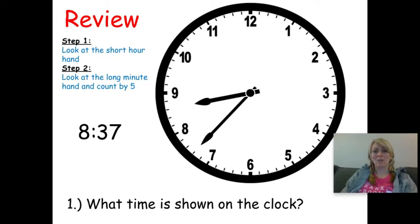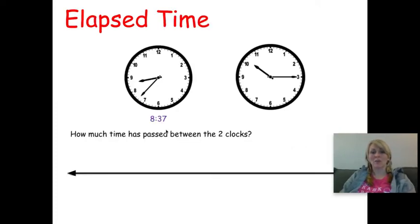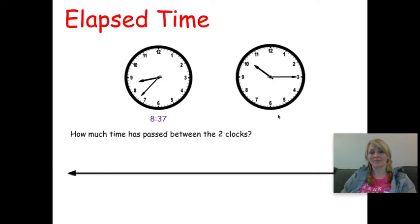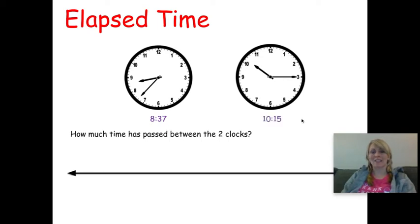Let's move on to elapsed time. We're going to find the time shown on two clocks and then decide how much time has passed between them. Our first clock is eight thirty-seven. Now we have another clock — pause the screen and write down what time is shown. On this clock, the short hour hand is just past the ten, so the hour is ten, and counting minutes by five: five, ten, fifteen. So the time is ten fifteen.